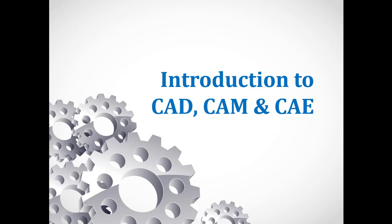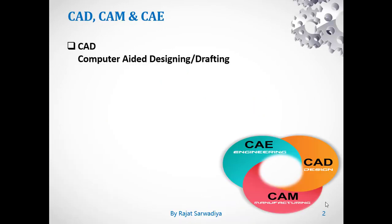Starting with the first technology, CAD. The full form of CAD is Computer Aided Designing or Computer Aided Drafting. Some people address it as Computer Aided Designing, some as Computer Aided Drafting, or CADD — Computer Aided Designing and Drafting. This technology and its tools help us in visualizing a particular product without it being manufactured, helping us present our ideas into reality.